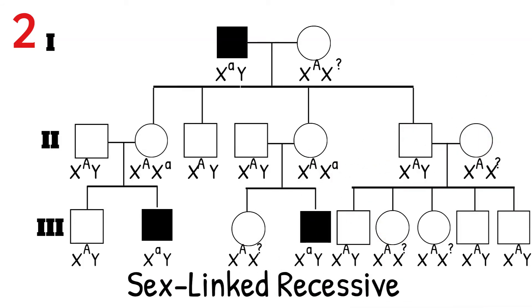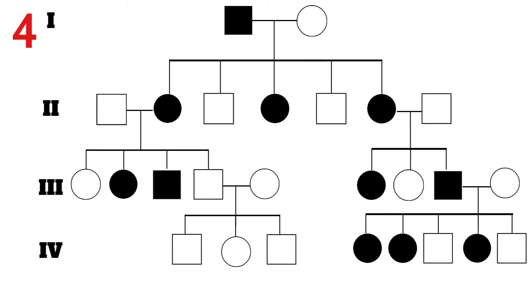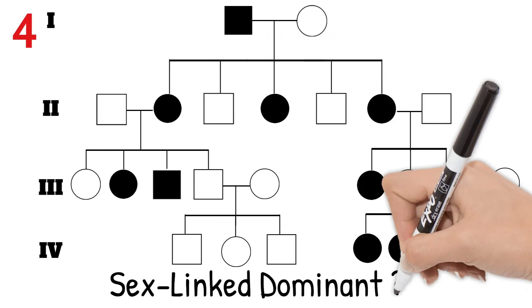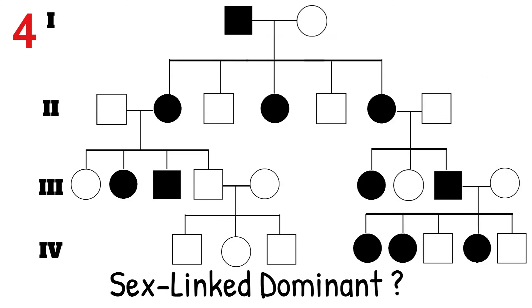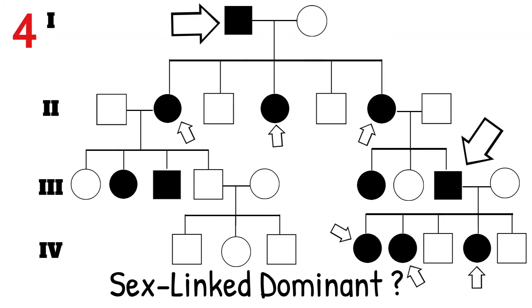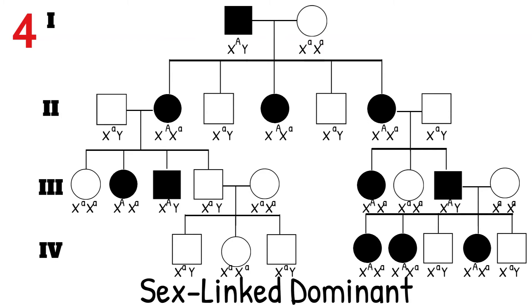Now that only leaves one option for the last pedigree, but let's take a closer look anyway. This trait is pretty common at every generation and seems to affect males and females. This should be sex-linked dominant, so let's see if all the daughters of men with the trait also have the trait. All the daughters do have the trait, and at a higher frequency than if the trait were autosomal dominant, so it must be sex-linked dominant.